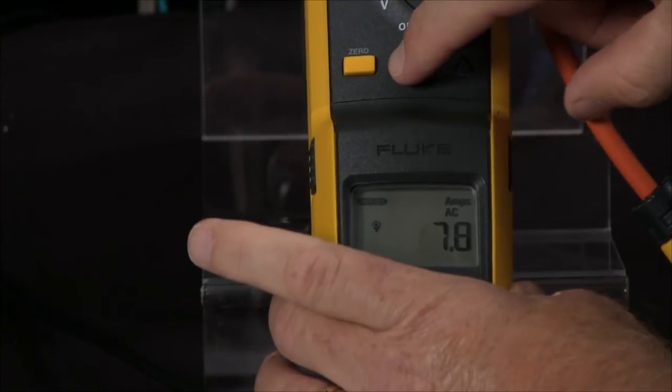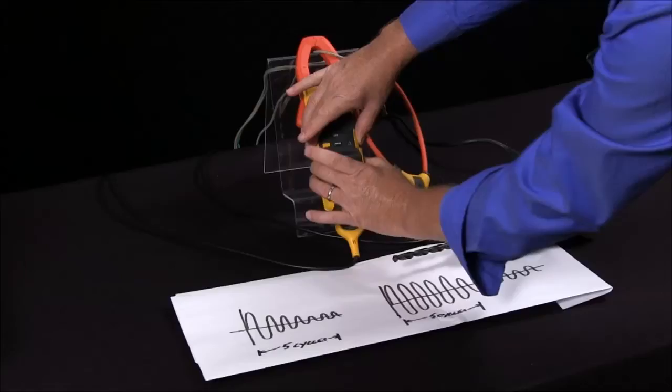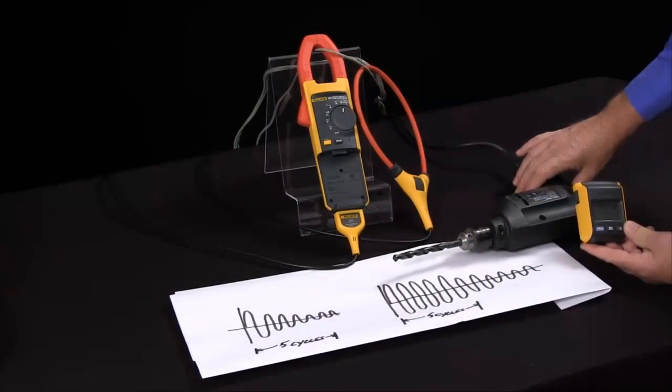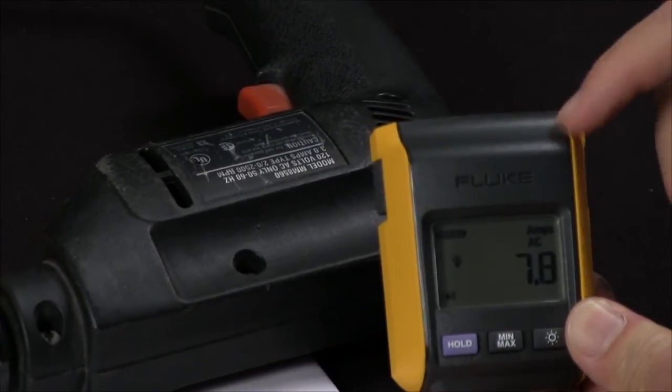Another great feature about the Fluke 381 is we can actually set our meter to inrush, pull our display over to where the motor start cabinet is, start our motor and get our inrush current remotely.